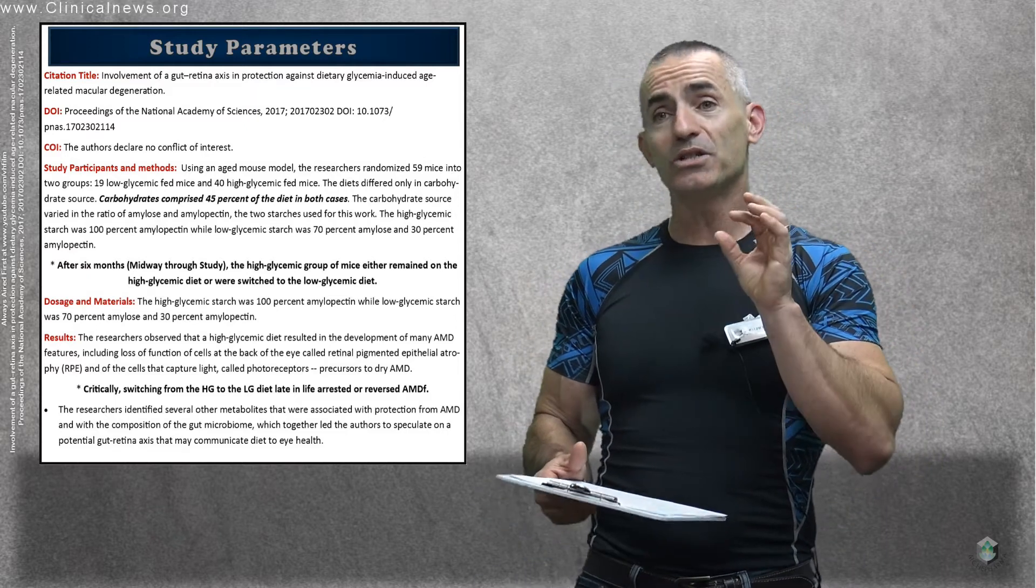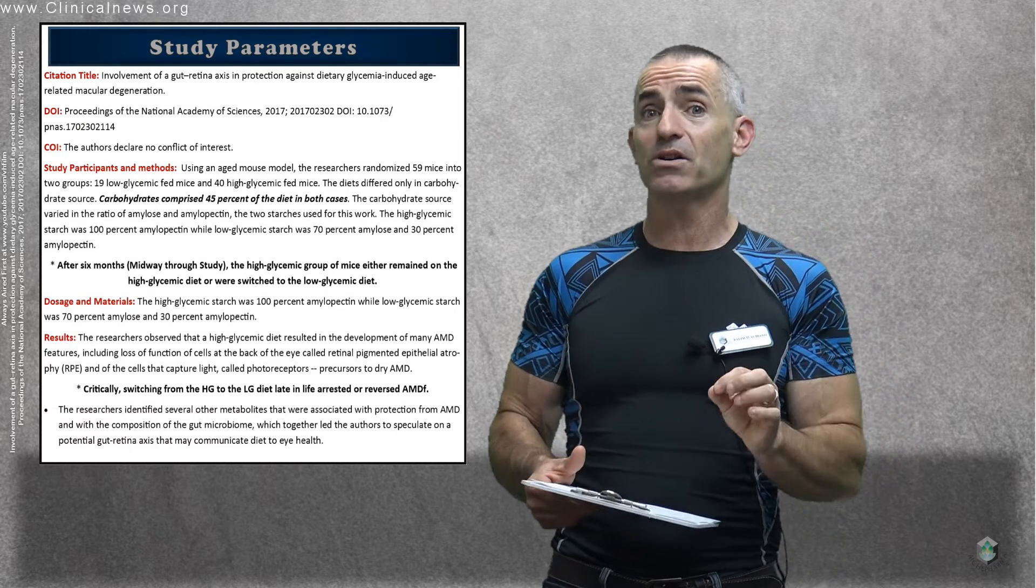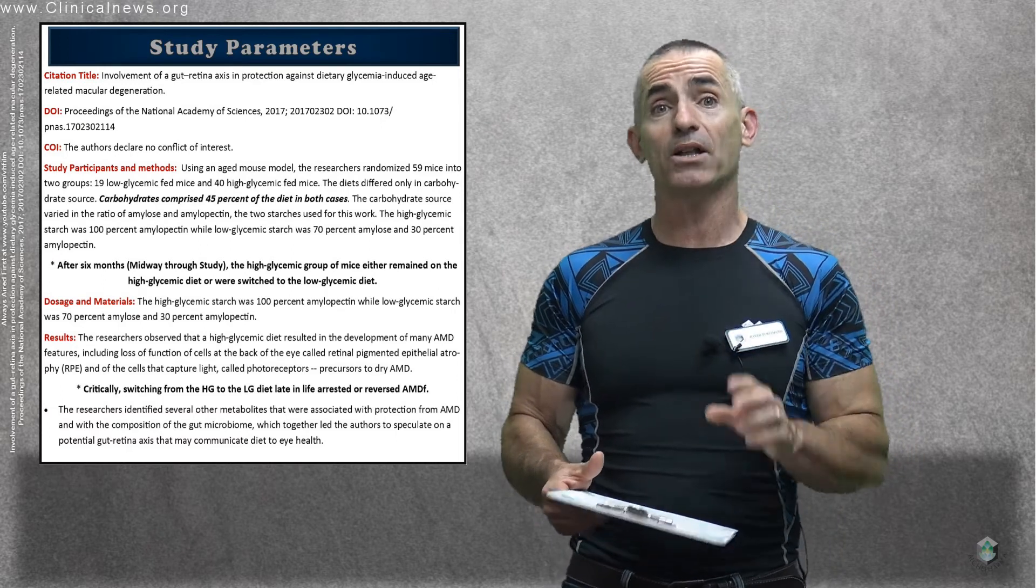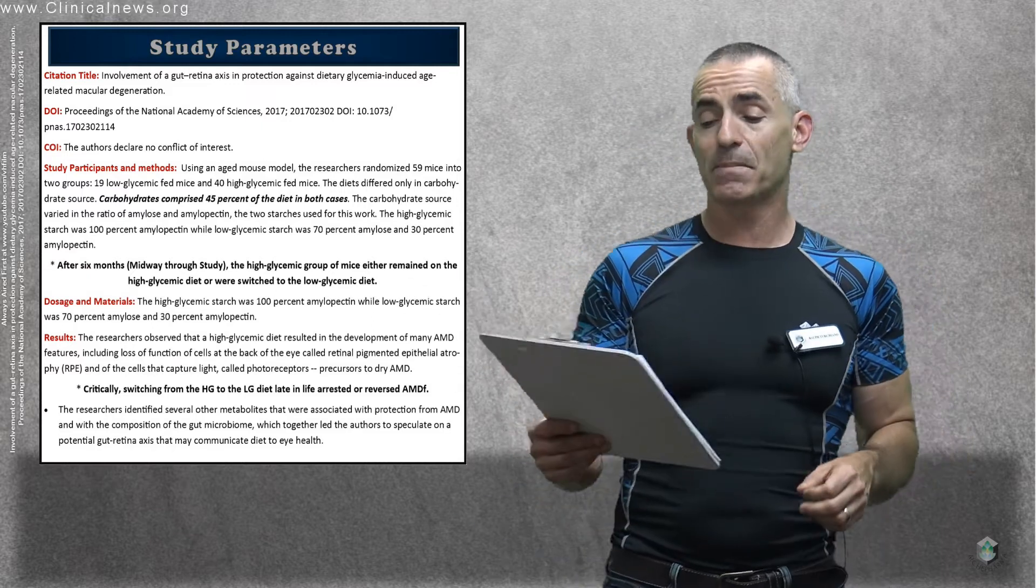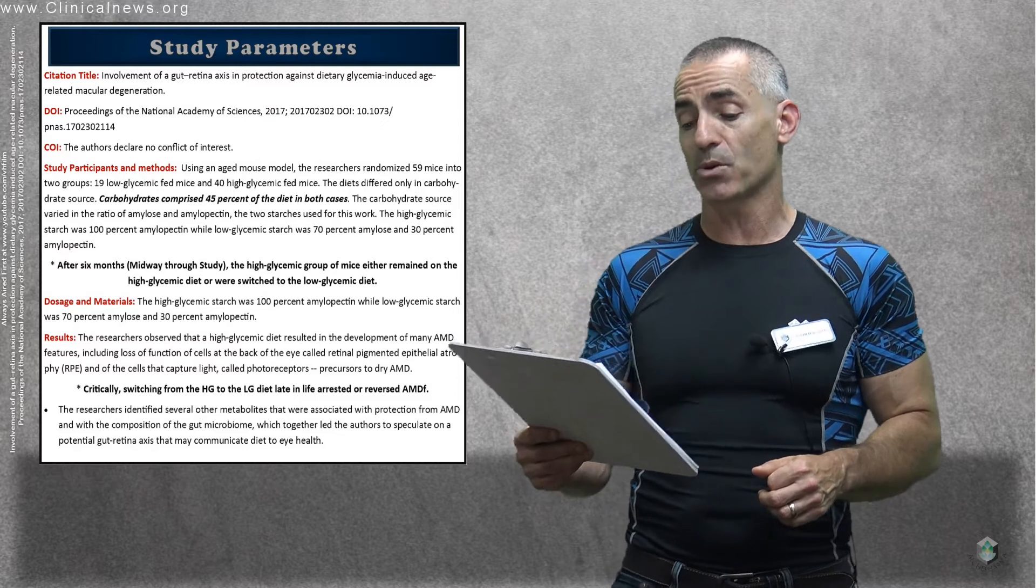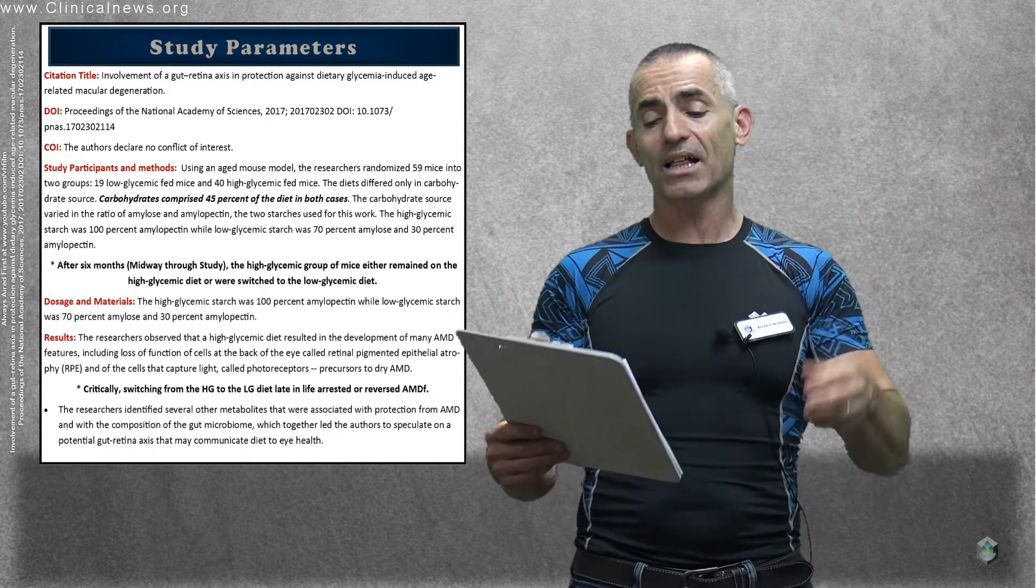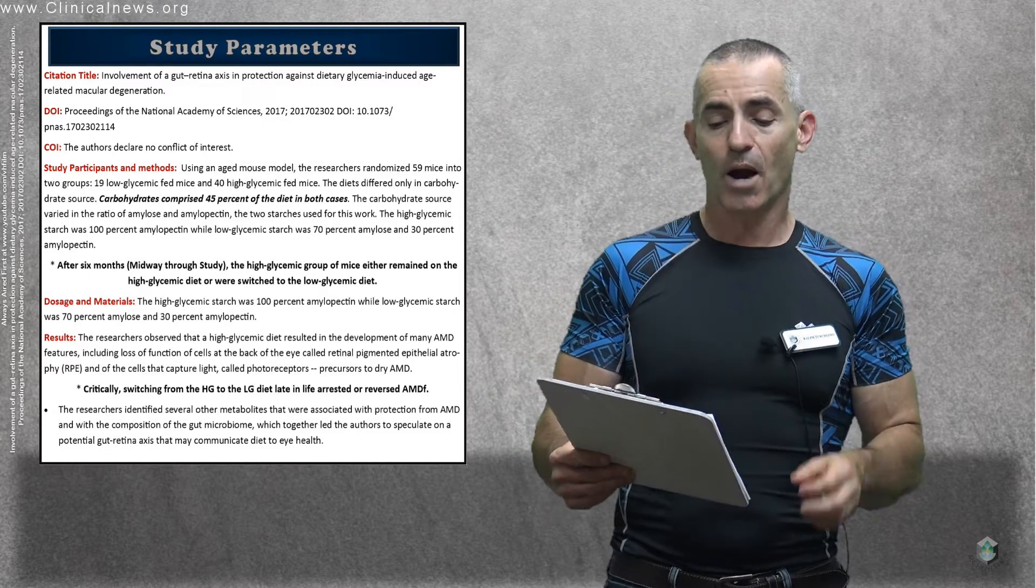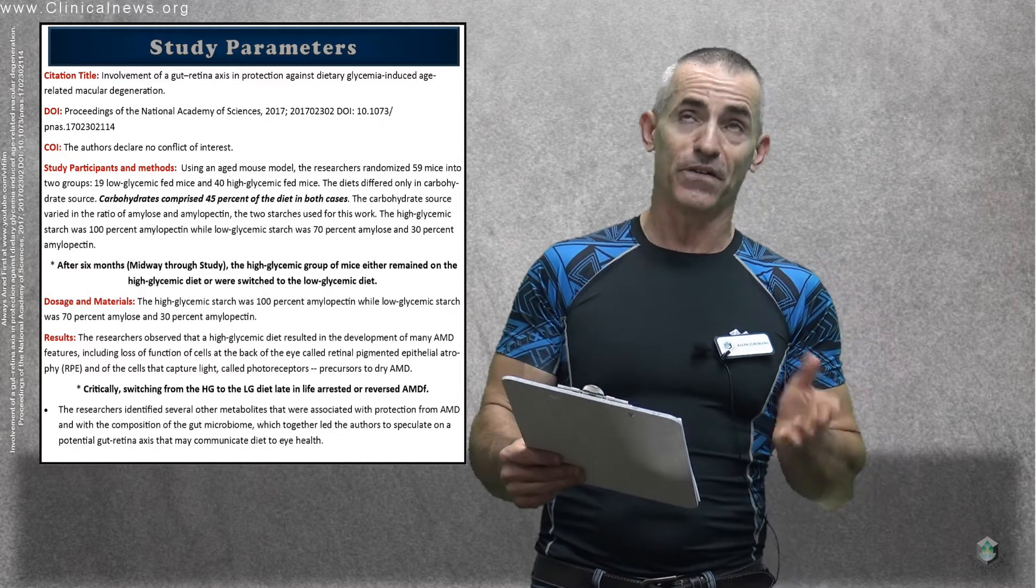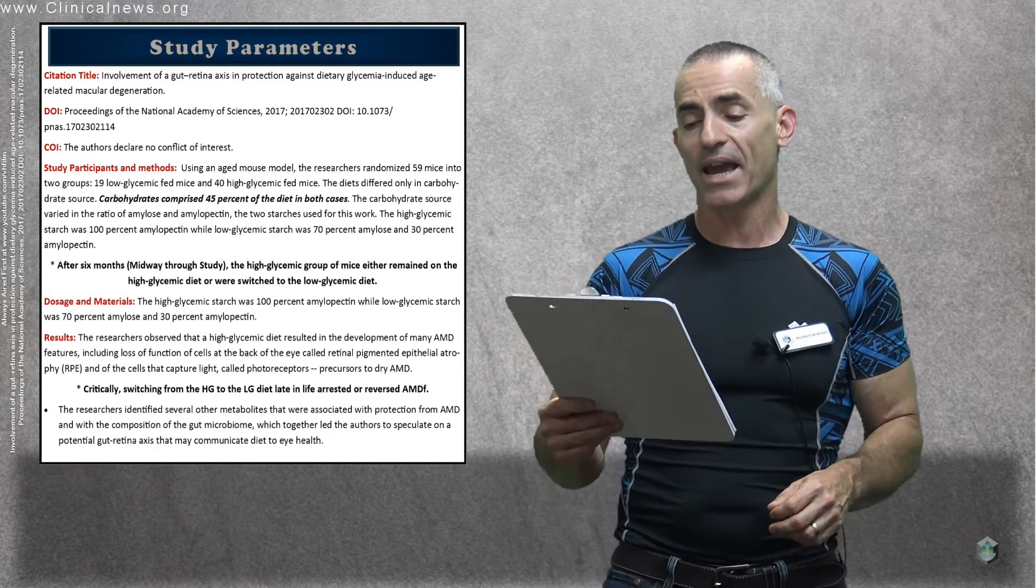The abstract goes into a little bit greater detail on the hypothesis why that gut bacteria may have strong impact on your eye health. Study participants and methods used an aged mouse model. Researchers randomized 59 mice in two groups: 19 low-glycemic-fed mice and 40 high-glycemic-fed mice. The diets differed only in carbohydrate source. Carbohydrates comprised about 45% of the diet in both cases.